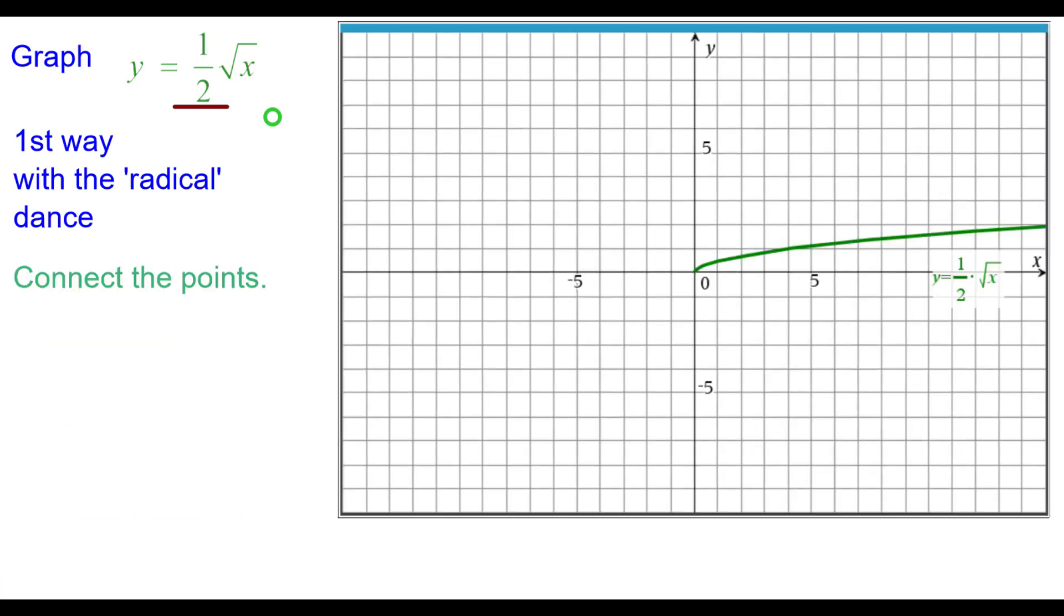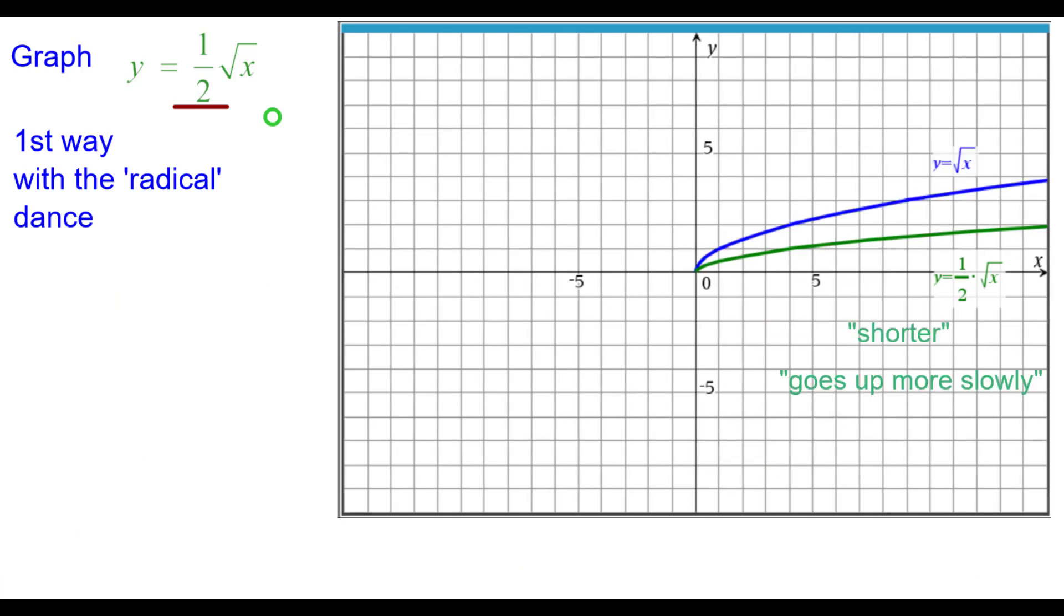Connect the points and we get that radical looking graph. Comparing it to the parent function you can see that it's shorter because it goes up more slowly because of that 1 half. Also you'll notice that the blue y value times a half is the green y value at this point and at this point, in fact at all the points.